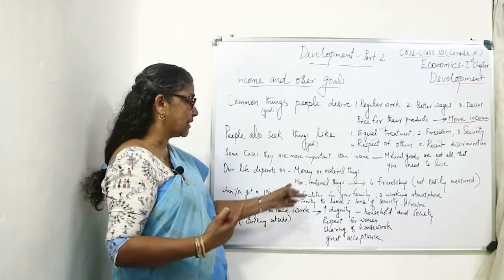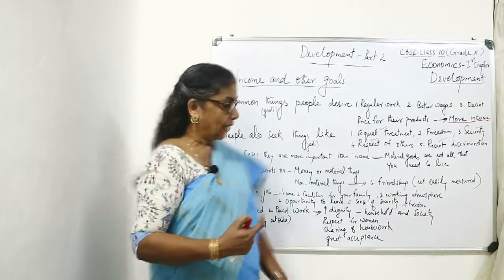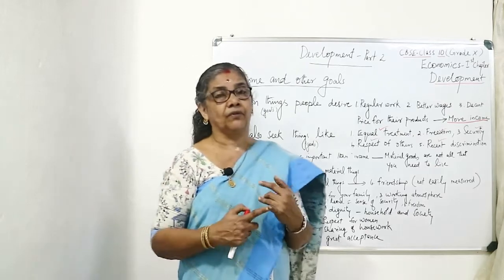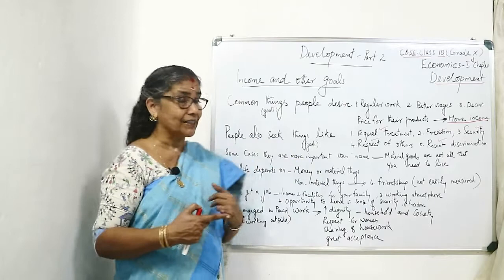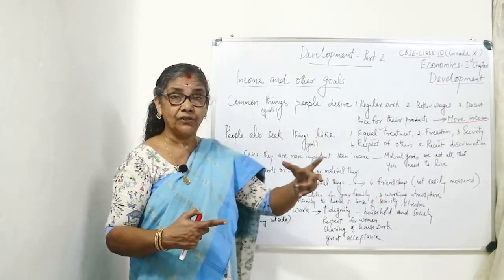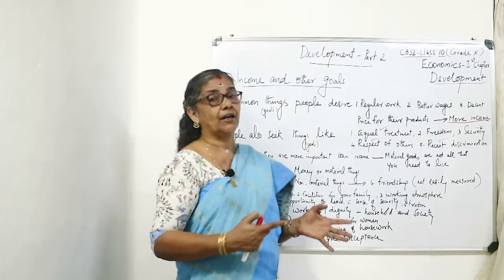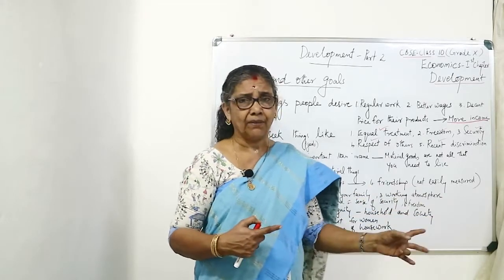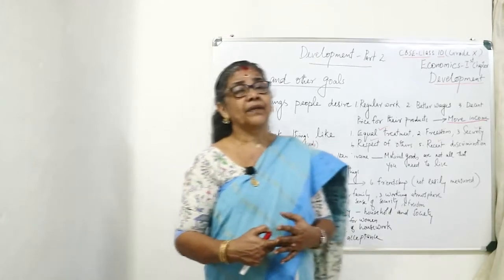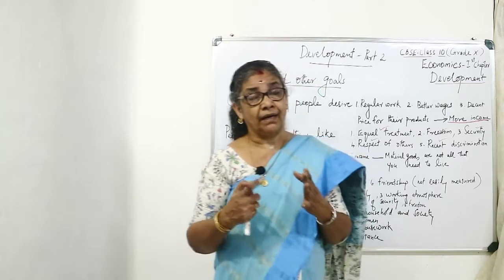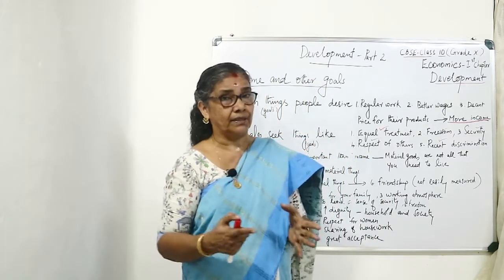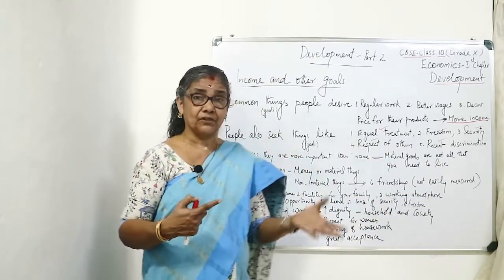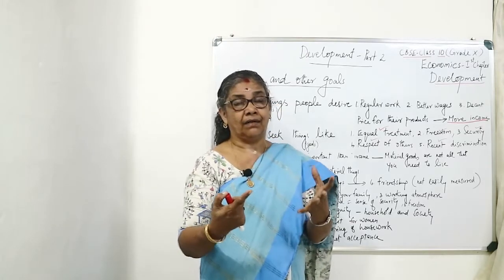Our life depends on material and non-material things such as friendship, which are not easily measured. When you get a job, you look at income first, but you also consider: facilities for your family — whether they can be comfortably accommodated — and working atmosphere, which is very important: what conditions the employer maintains, the terms and conditions given to you.